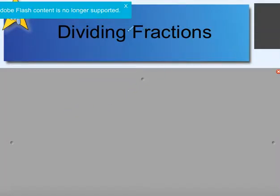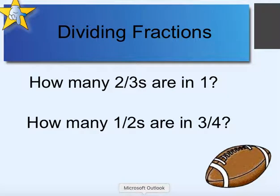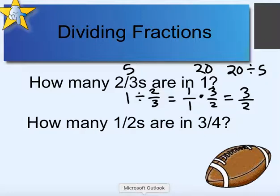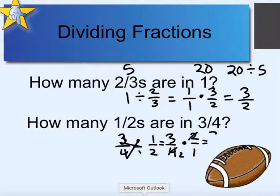When we get to word form of dividing fractions, we need to set them up. 'How many two thirds are in one?' If this were 20 and 5, how many fives go into 20? We'd say 20 divided by 5. In this case: one divided by two thirds. We copy 1 over 1 and multiply by 3 over 2. So we can get three halves — or one and a half — two thirds into one. Similarly, 'how many halves are in three fourths?' We do three fourths divided by one half: copy three fourths and multiply by 2 over 1. This also comes out to three halves — there are one and a half halves in three fourths.